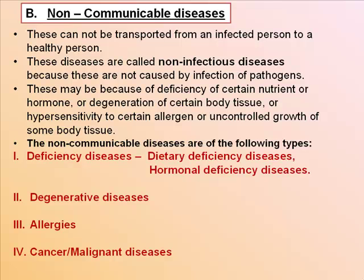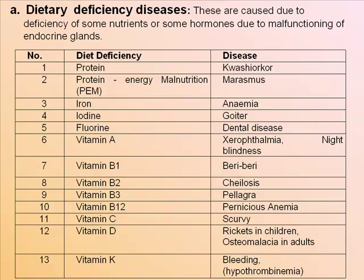Non-communicable diseases cannot be transmitted from an infected person to a healthy person. These are called non-infectious diseases because they are not caused by infection of pathogens. They may be due to deficiency of certain nutrients or hormones, degeneration of body tissue, hypersensitivity to certain allergens, or uncontrolled growth of body tissue. Types include deficiency diseases (dietary and hormonal), degenerative diseases, allergies, and cancer.